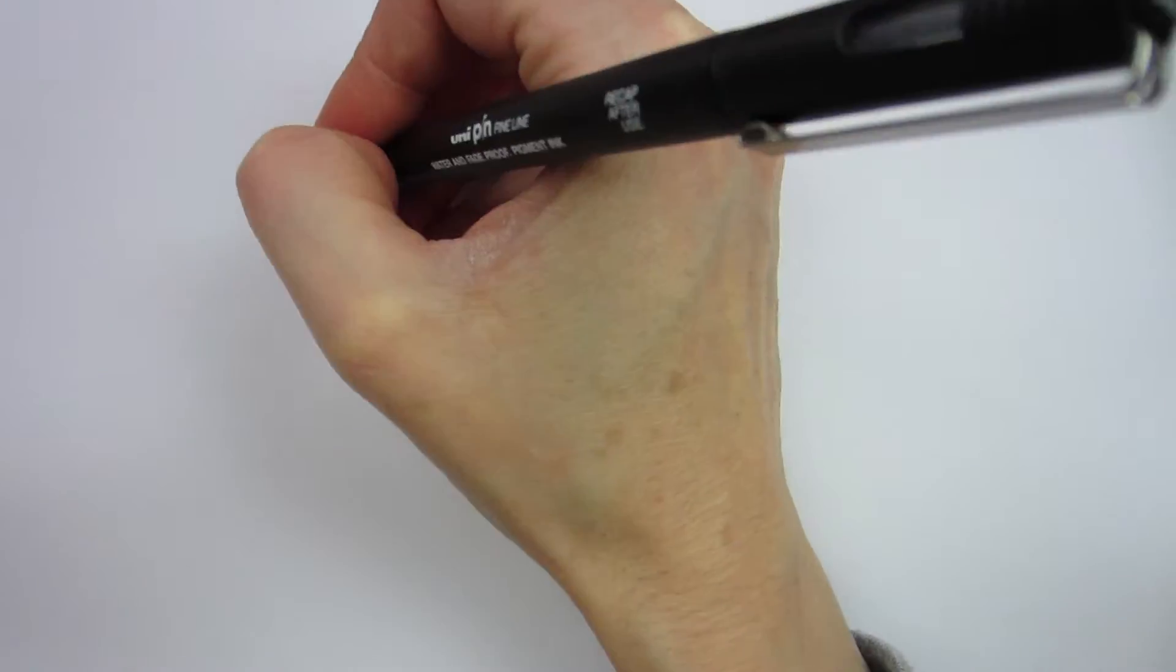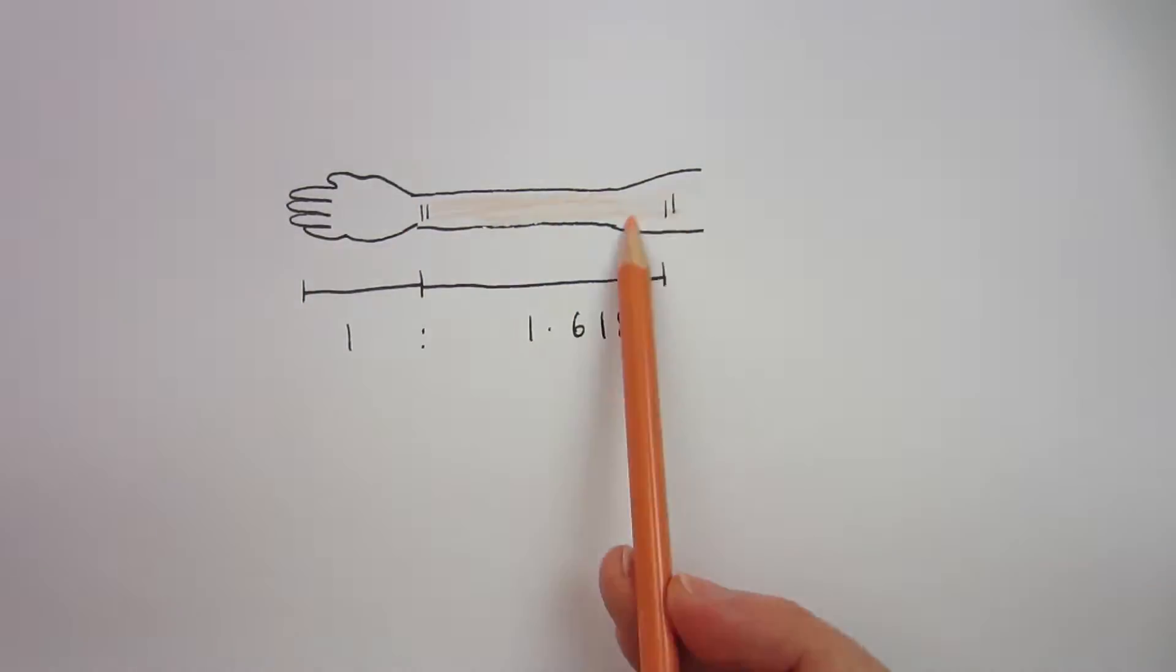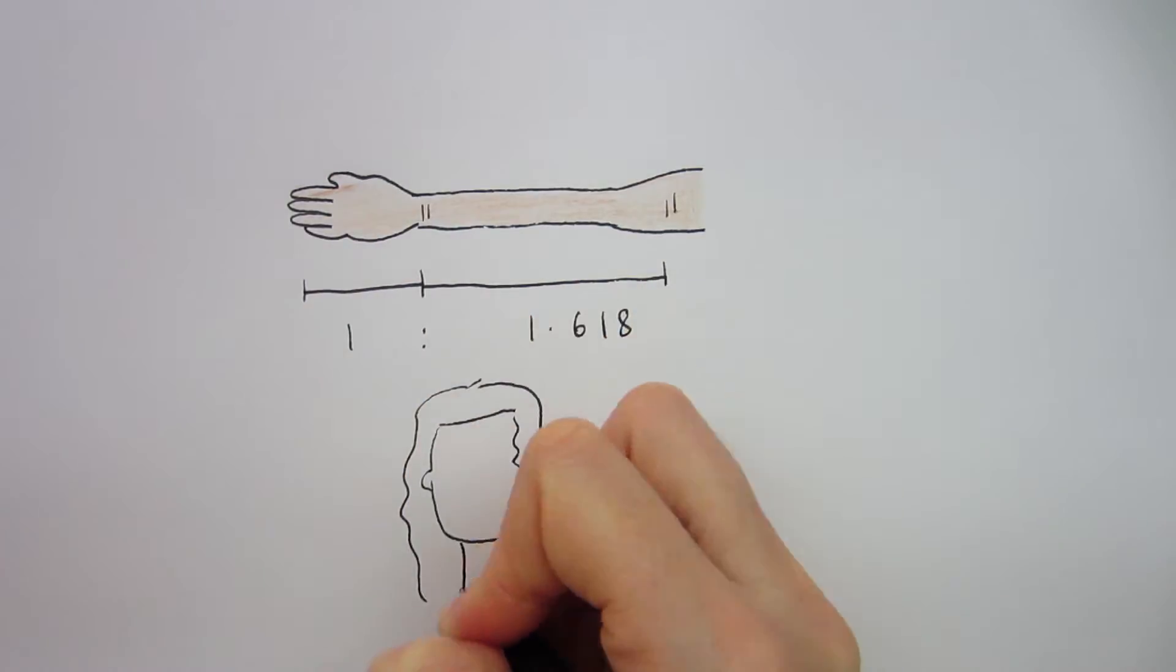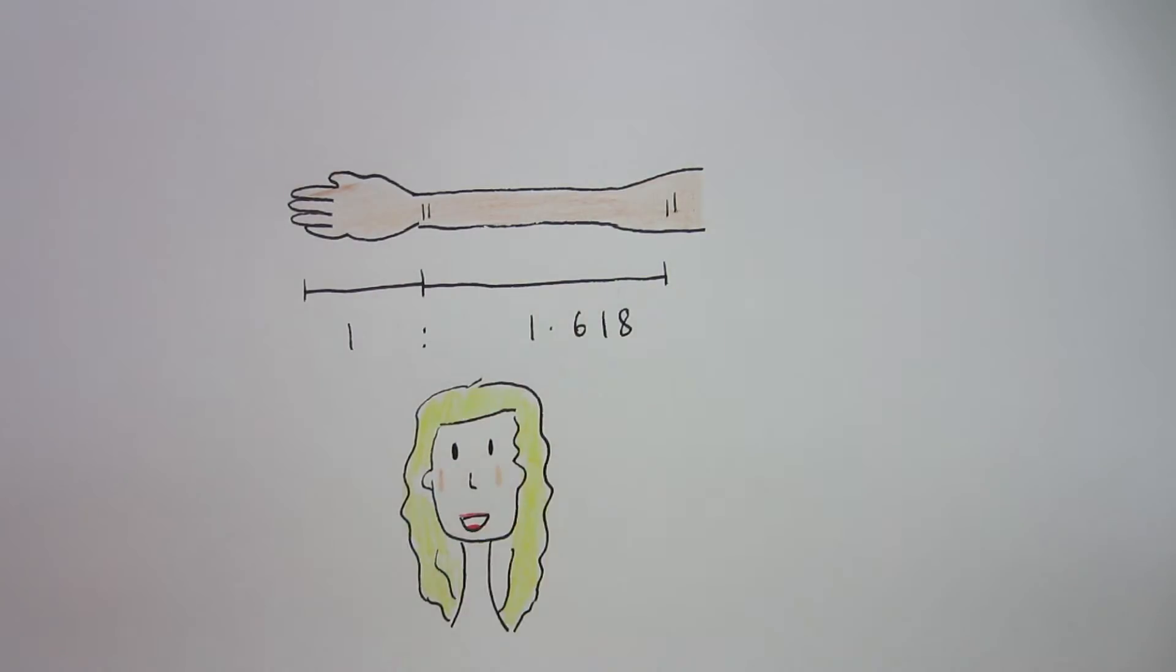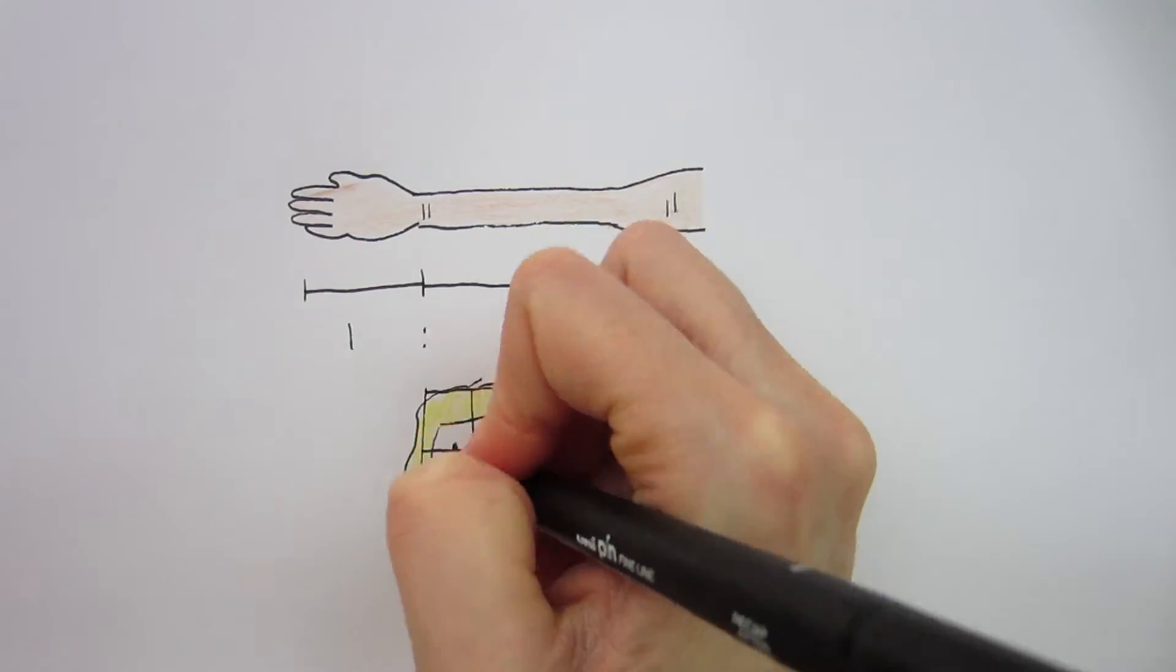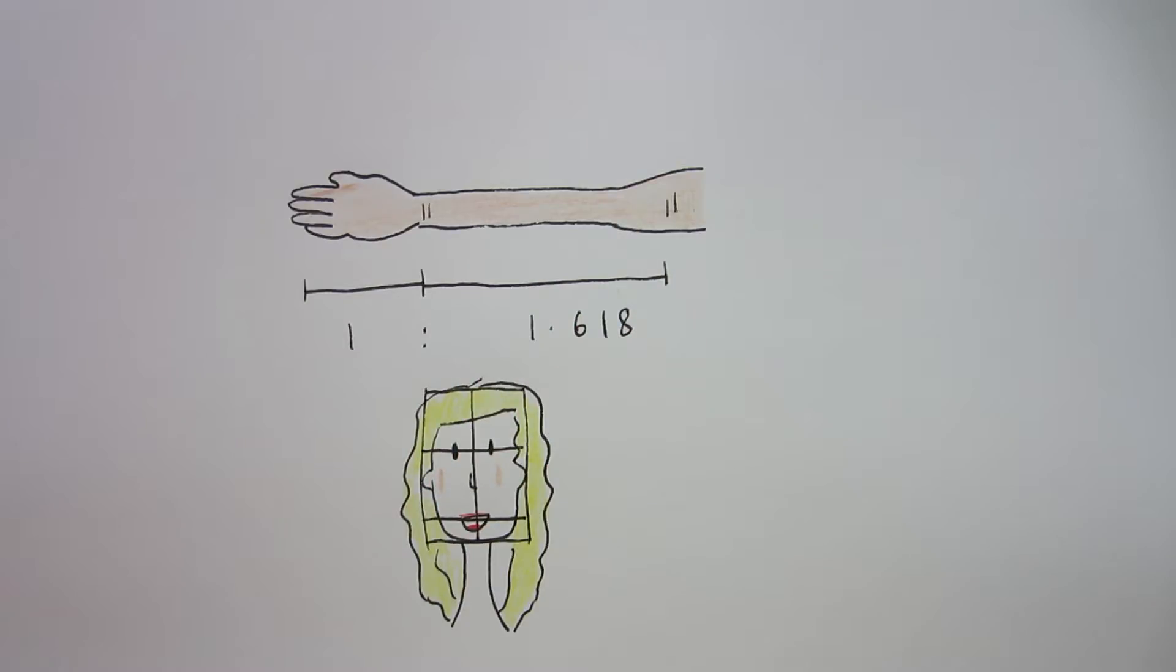The wrist divides the hand and forearm into the golden ratio. And the human head is embedded within the golden rectangle, with eyes at its midpoint. The mouth and nose are placed at golden sections of the distance between the eyes and the bottom of the chin.